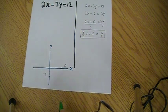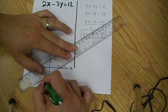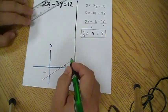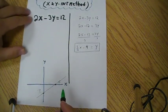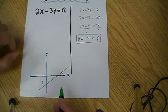And now we've got 2 points, and we can graph that line. And that's the graph for 2x minus 3y equal to 12.